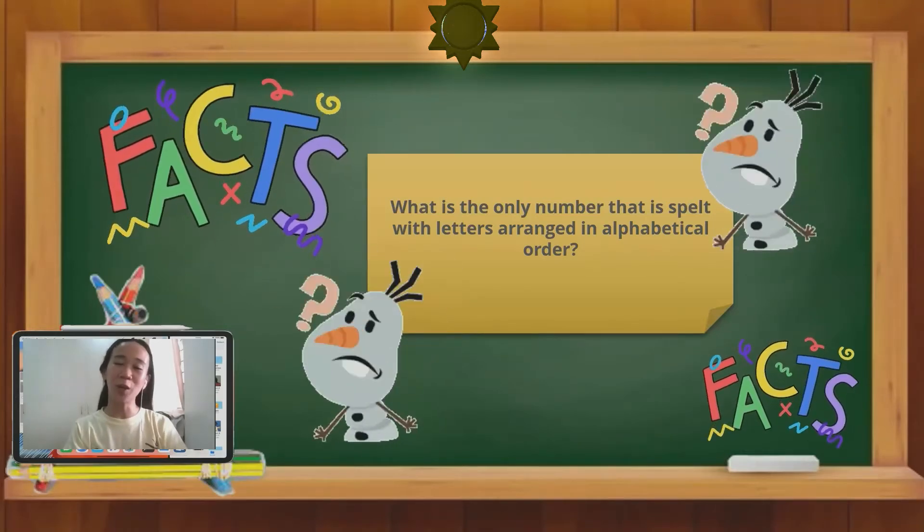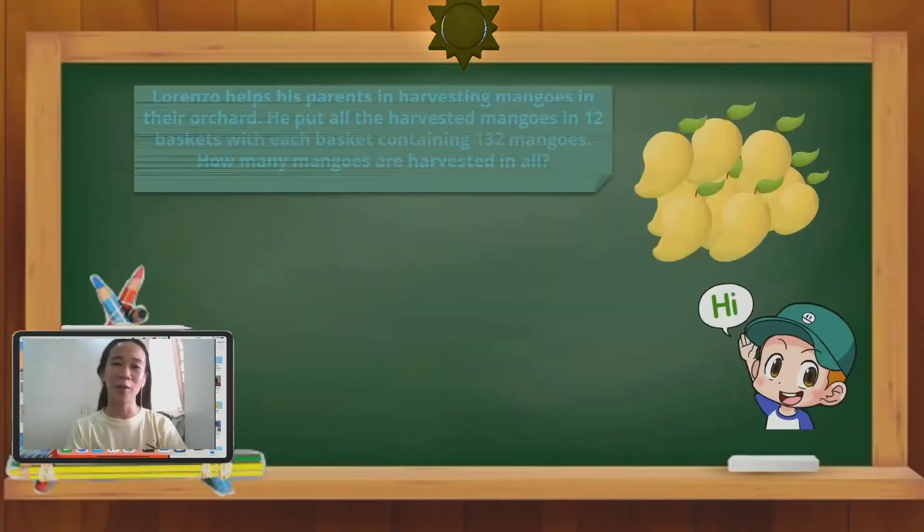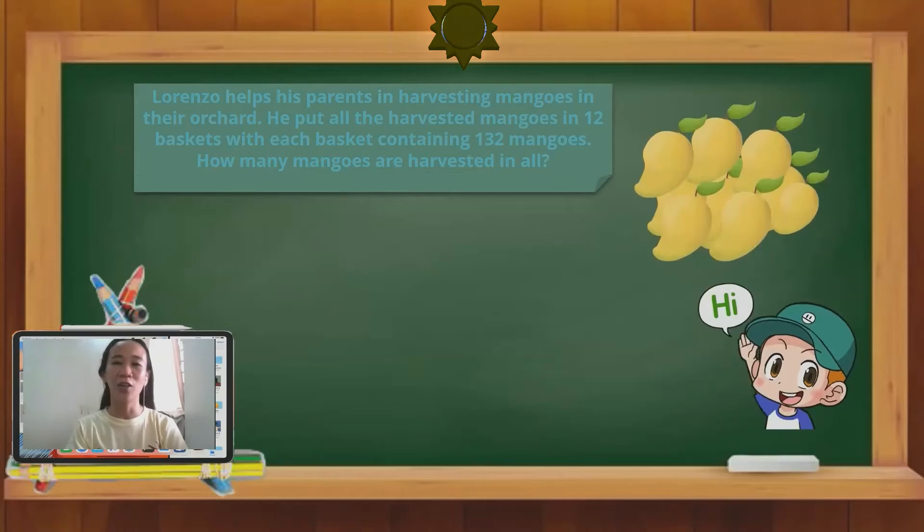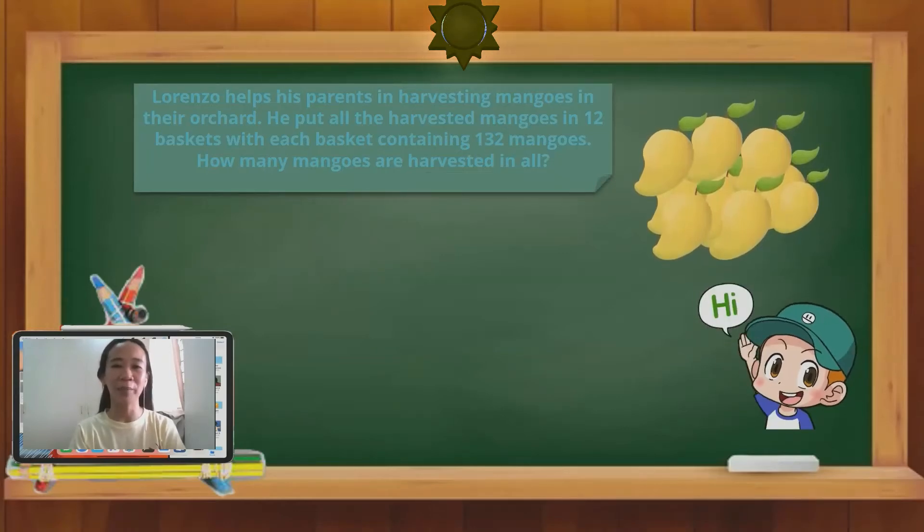Come on, let us proceed to our topic! We have a situation here. Lorenzo helps his parents in harvesting mangoes in their orchard. He put all the harvested mangoes in 12 baskets, with each basket containing 132 mangoes. How many mangoes are harvested in all? What do you think are we going to do with this situation?